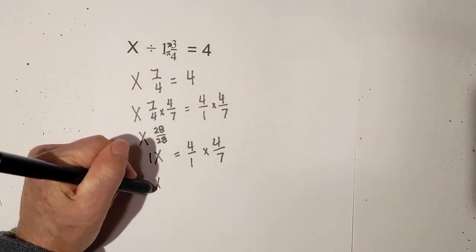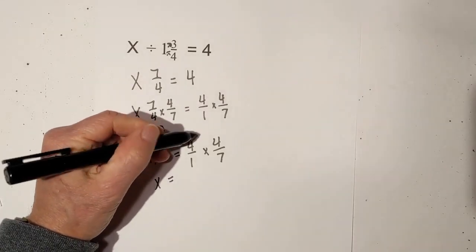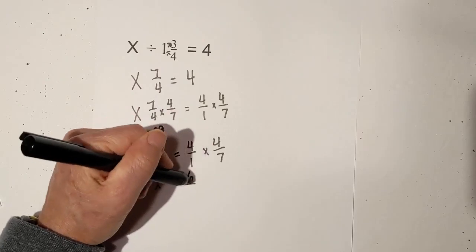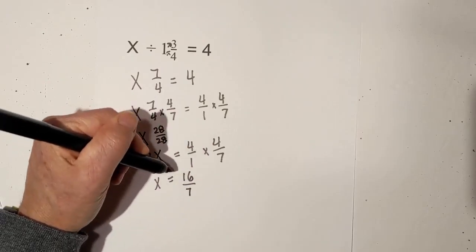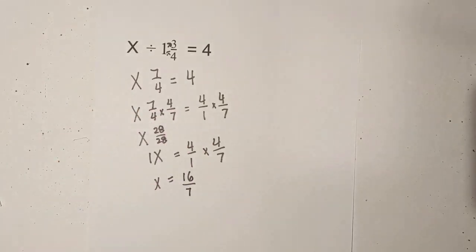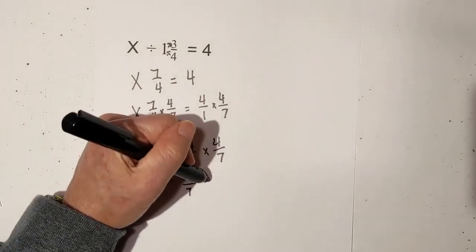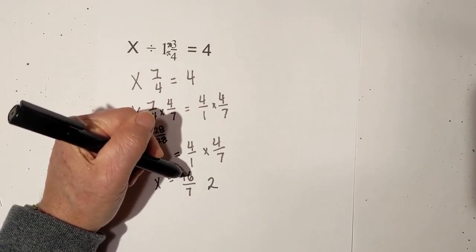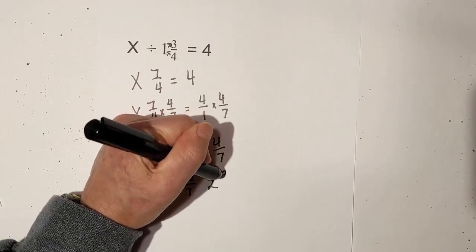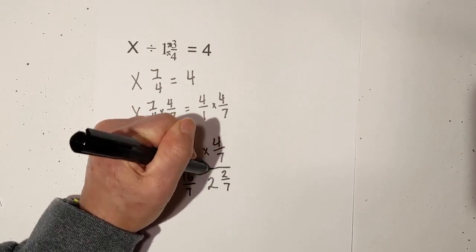Now, x equals 4 times 4 is 16, 1 times 7 is 7. If you would like, you can convert that. 7 goes into 16 two times, and 16 minus 14 is 2 sevenths.